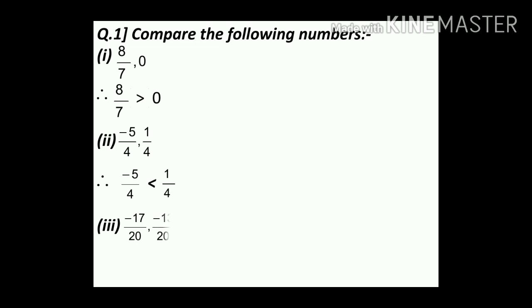Third one: minus 17 upon 20 comma minus 13 upon 20. Here children, both numbers are negative and the denominator is the same, so we compare the numerators. Minus 13 is greater than minus 17, so the answer is minus 17 upon 20 less than minus 13 upon 20.